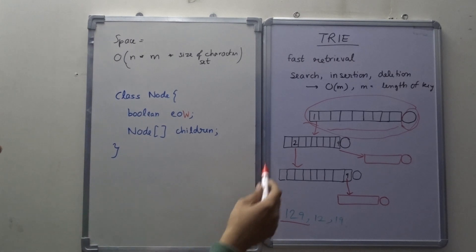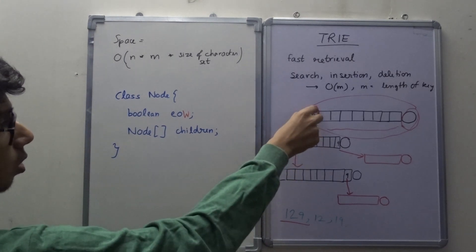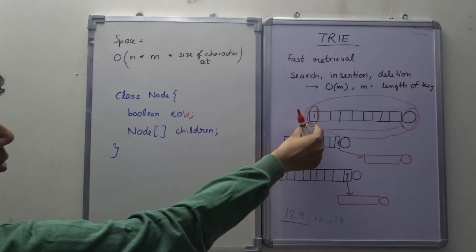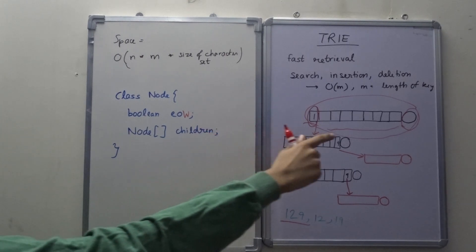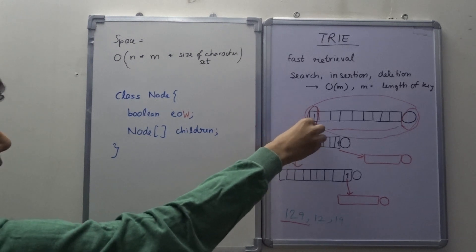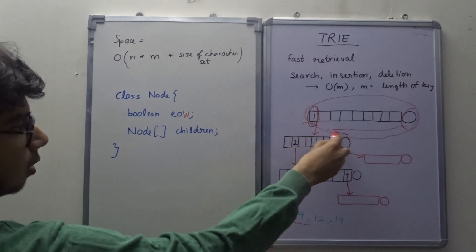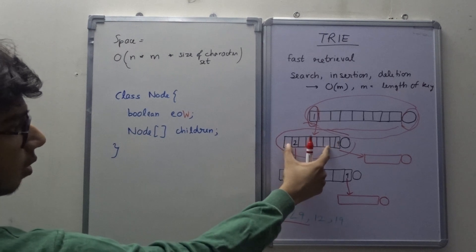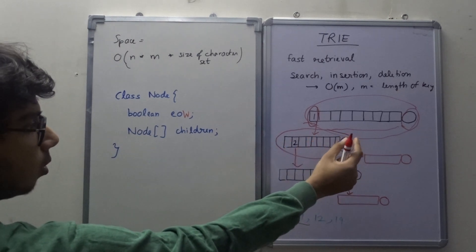Now, I assign—I give this node, that is the first in 0th index of the child array as a new node. So, I assign this node an array and an end of word boolean.